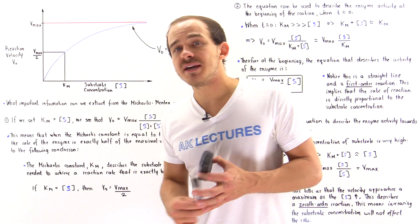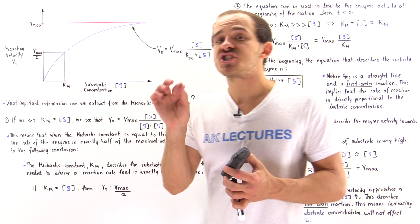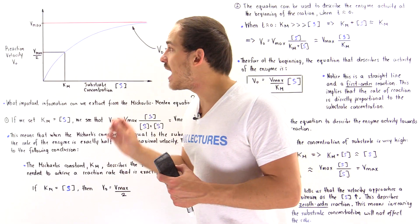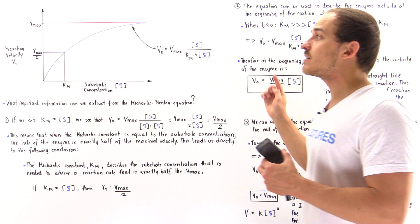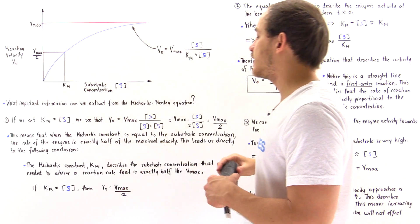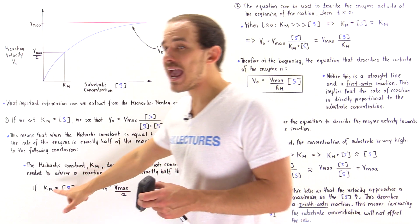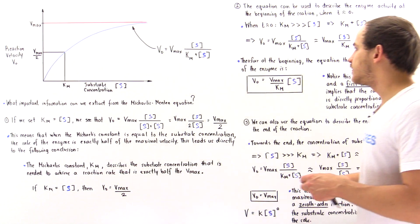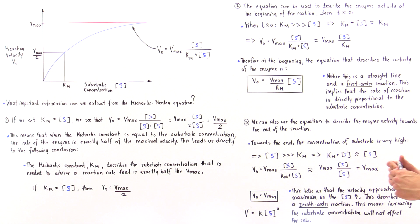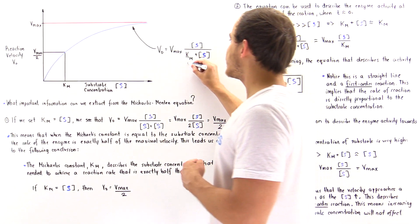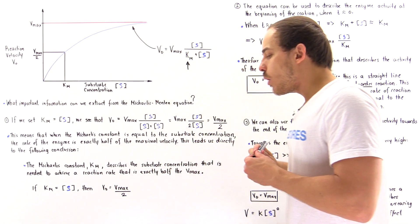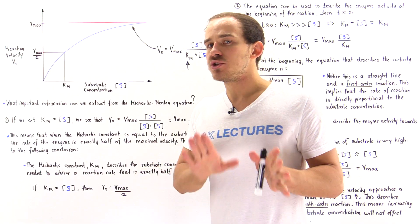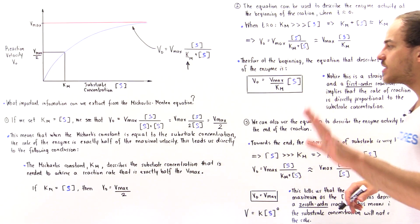Basically, the Michaelis constant KM describes the substrate concentration at which the velocity of that enzyme's activity is exactly half of its maximum velocity, Vmax. So if KM equals the substrate concentration, then V0 equals Vmax divided by 2. KM basically describes the situation when exactly half of all the active sites are filled with the substrate.